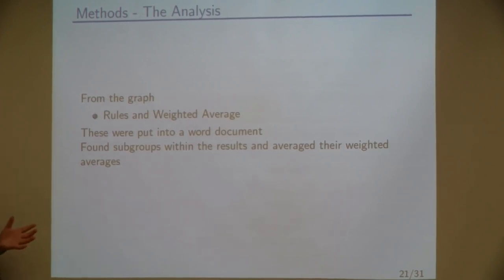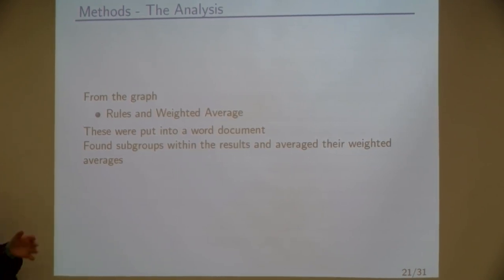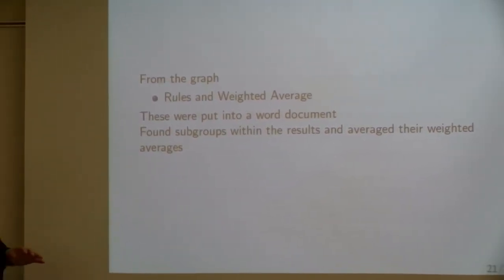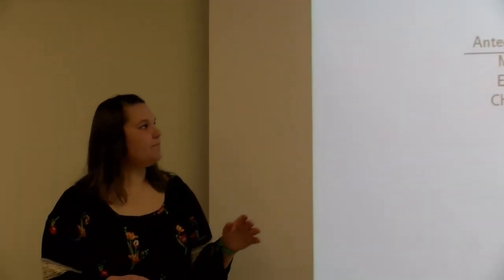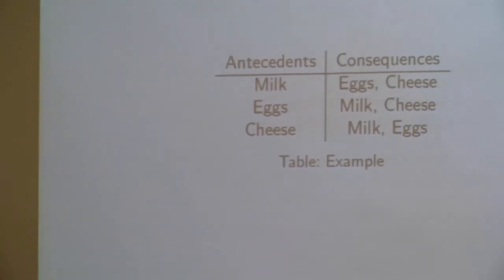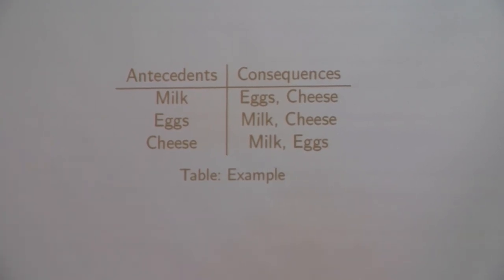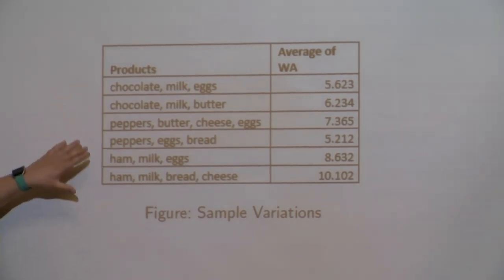And from the graph, we took all the rules and all of the weighted averages and we put them into a Word document. Set up in the if, then format, and then the weighted average in the back. And what we were looking at was we were looking at subgroups. So as you can see, we have three of the same products into three different subgroups here. And ideally, they're going to be around the same weighted average. And they're basically going to be in the same thing. So what we did was we averaged all of these weighted averages and then just stuck them into a single group looking like this.